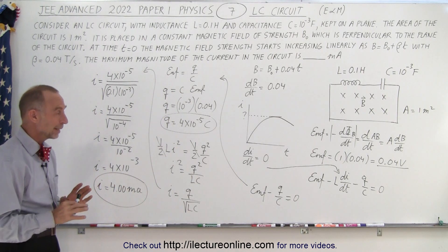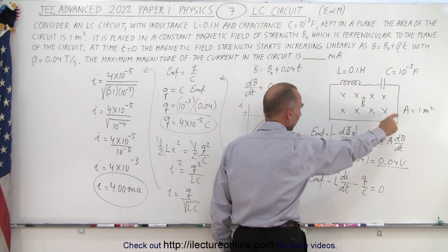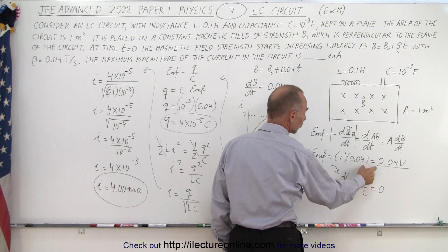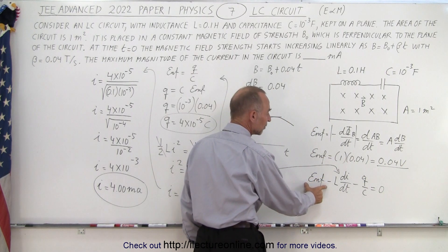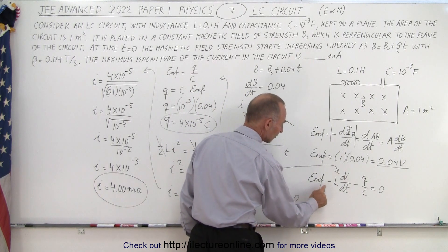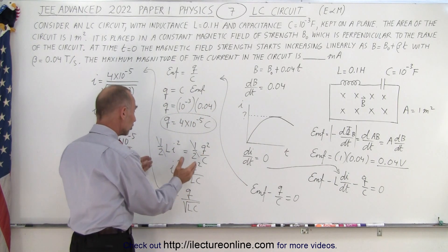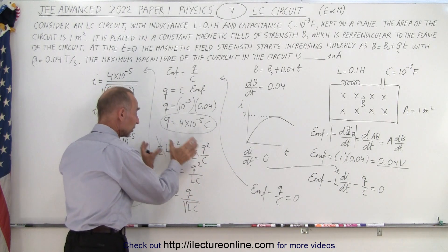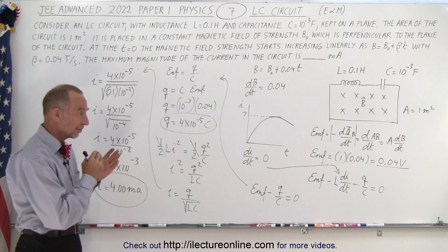It's a tricky problem. First, find the EMF induced based on the circuit area and the equation describing the B field — taking dB/dt gives the EMF. Then set up the Kirchhoff voltage equation including the induced EMF. At maximum current, di/dt goes to zero, so EMF minus Q/C equals zero — solve for Q. Finally, set the energy on the inductor equal to the energy on the capacitor, and solve to find I equals 4 milliamps.